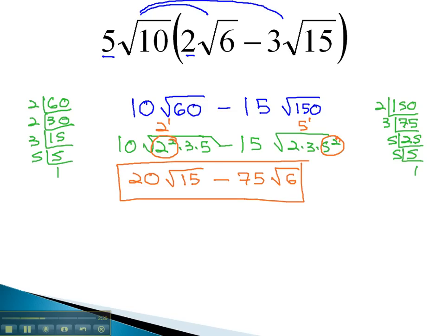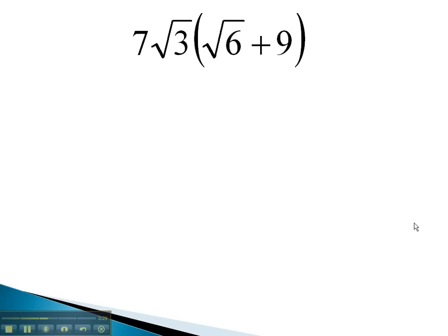Let's take a look at another example where we have to distribute through the parentheses and then simplify our radicals as much as possible. In this problem, again, we'll distribute by starting to multiply the 7√3 by the √6.